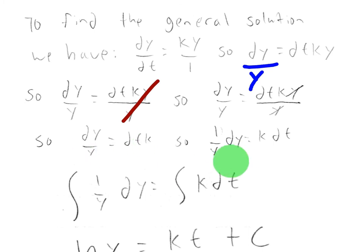From there, we now have the y's separated from the dt's and the k. We want to rewrite this so that dy/y becomes 1/y times dy.